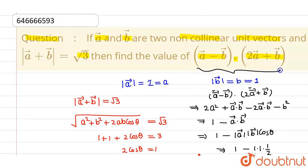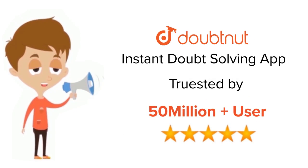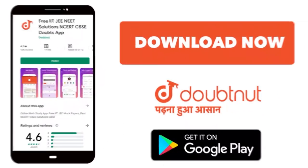The value of this particular thing is 1 by 2. I hope you understood. Thank you. For Class 6 to 12, IIT and NEET level, trusted by more than 5 crore students. Download Doubtnet app today.